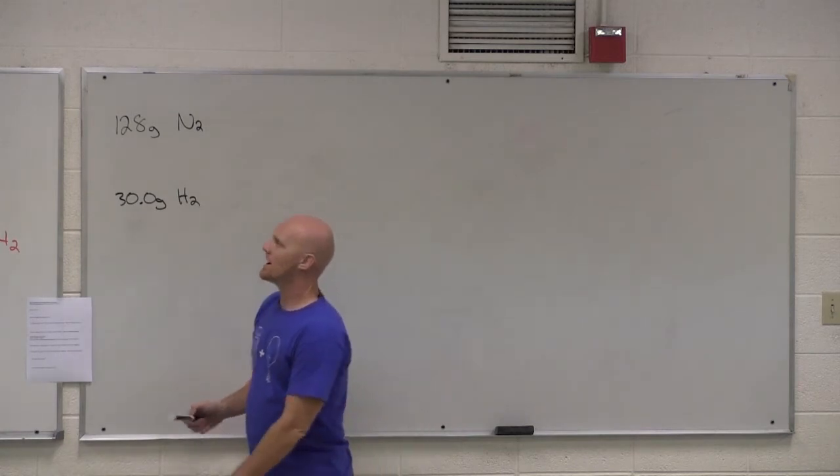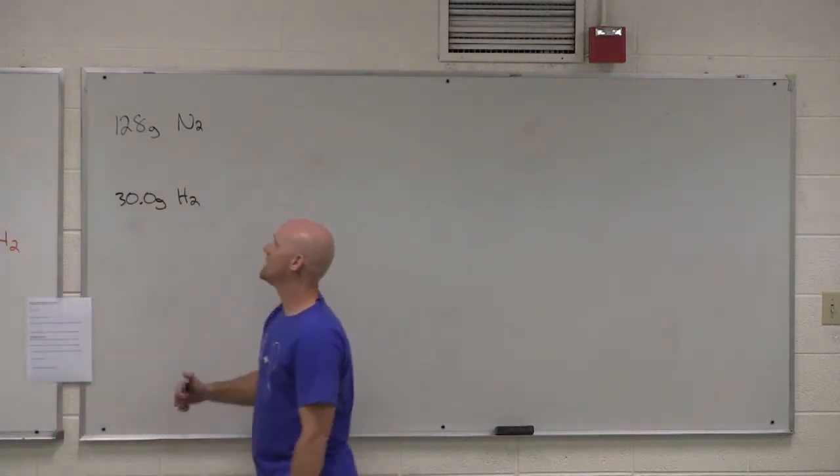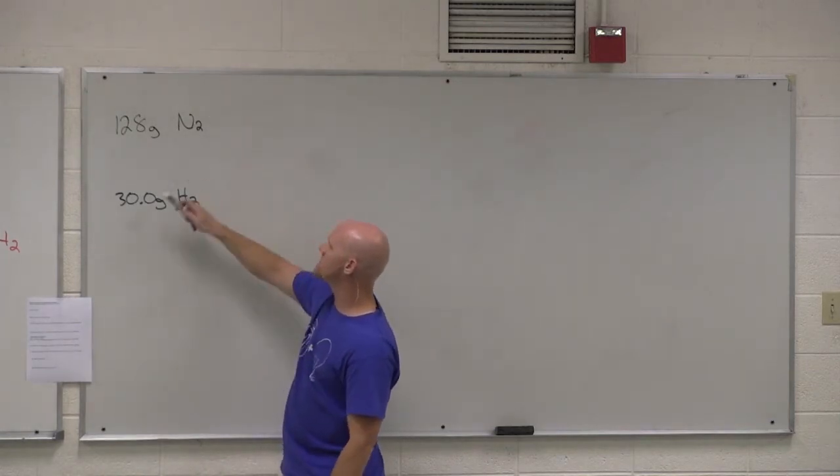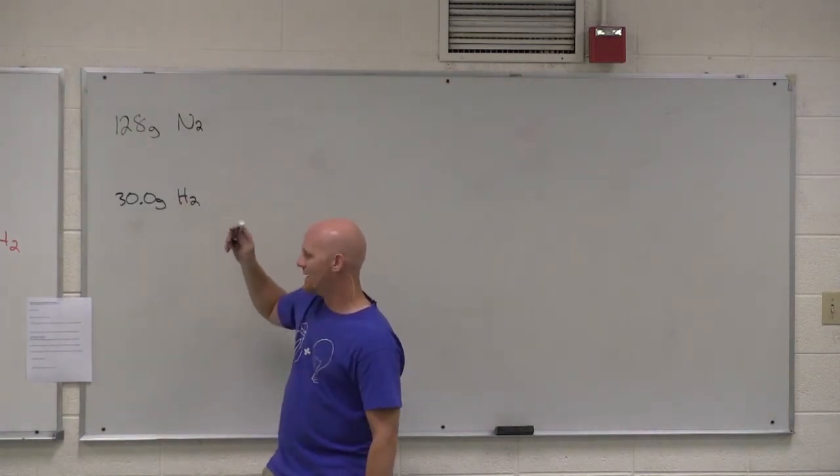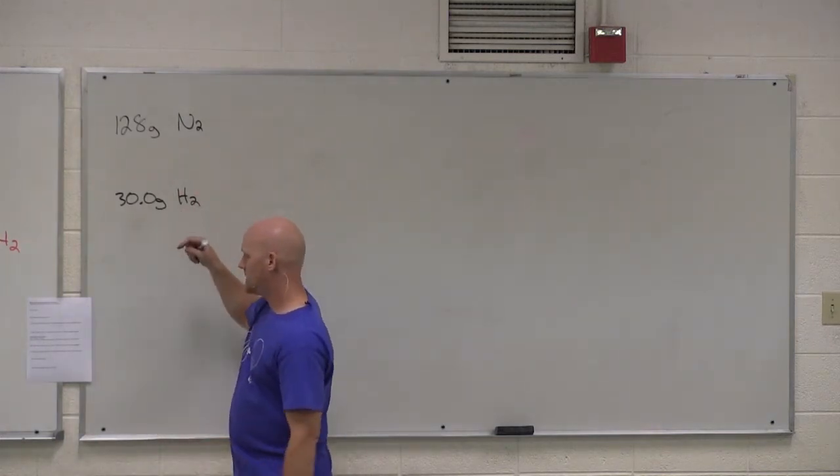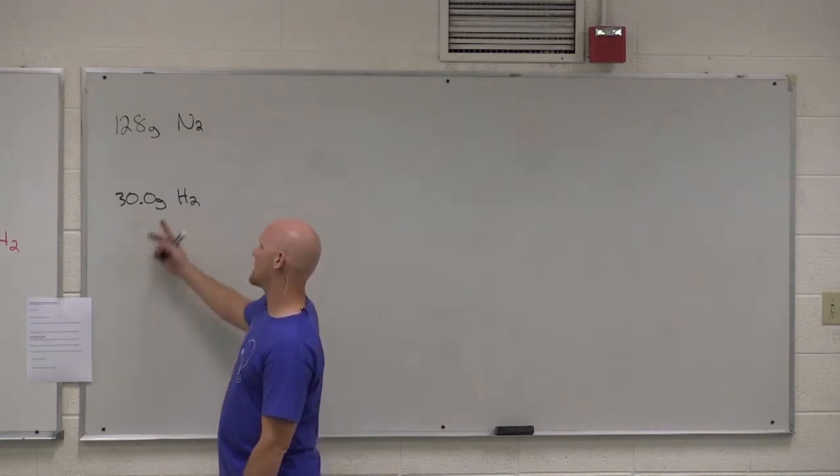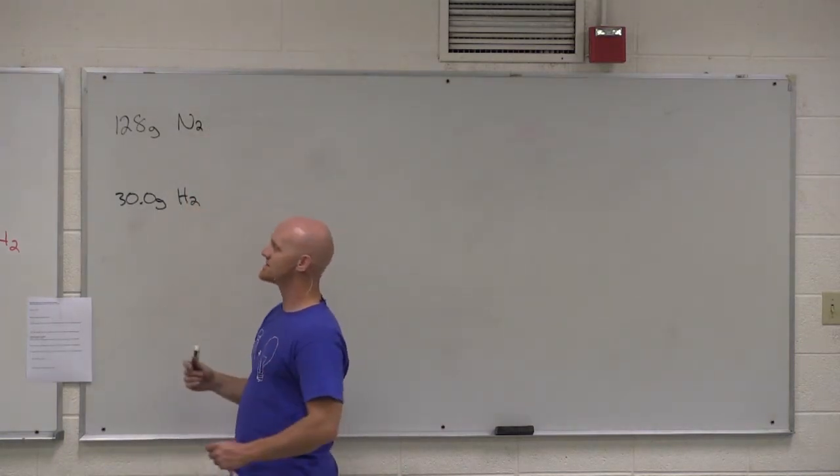So still dealing with the same chemical reaction of N2 plus 3H2 going to 2NH3. And now we're going to start with 128 grams of N2, 30.0 grams of H2. And we've got a series of three questions. First one says, which is the limiting reagent? And you might think so, but it's not so easy to determine. You're like, oh, I got less of him. Must be. Not necessarily the case.